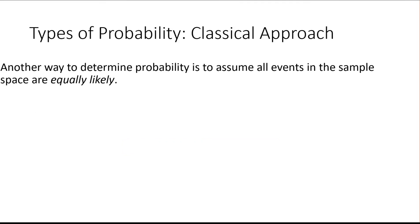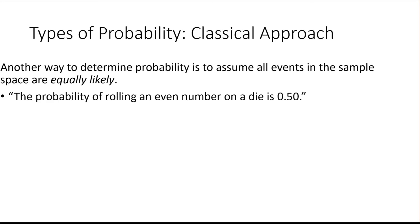Our next type of probability is called classical probability. This is a lot of the preset textbook examples where we already know everything that could happen and everything is equally likely to occur. Examples include rolling a die — you have six options, every number has an equal chance of showing up. The probability of rolling an even number is 0.5 because there are three ways for it to show up (2, 4, and 6) out of the six total numbers on the die.